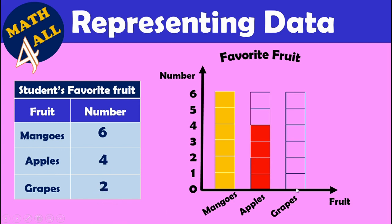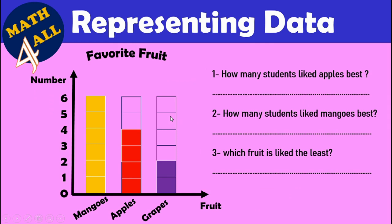The last fruit is grapes. 2 students chose grapes, so you have to color the bar to reach number 2 on the graph.